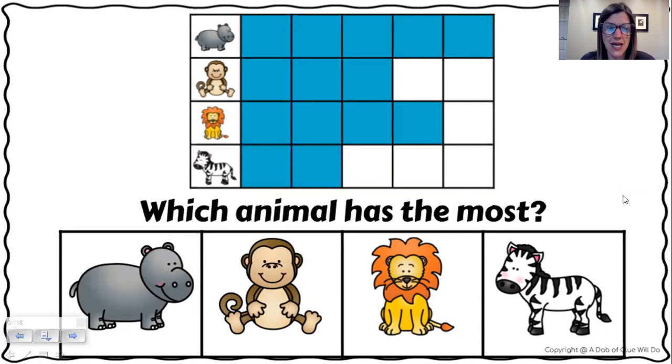The first question says, which animal has the most? When I think of most, I think of the biggest number, not the smallest, the biggest. So just look at that graph and without even counting, you're able to answer that question. Which animal has the most?